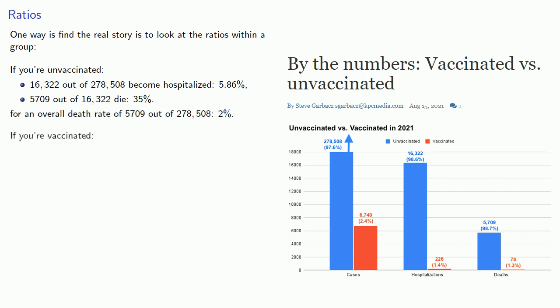Meanwhile if you're vaccinated, 226 out of 67,040 became hospitalized. That's 3.3%, and 78 out of 226 die, that's also 35%, for an overall death rate of 78 out of 67,040, 1.1%.